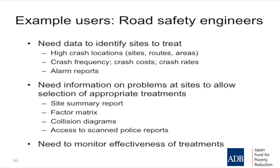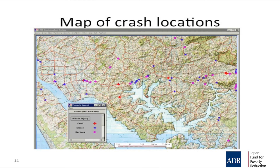Engineers look at the number of crashes, crash costs, and crash rates. They also look at locations where crashes have increased unexpectedly. The information is needed to become a detective at these locations — to understand the problems and identify the solutions. There are a whole range of tools used by road engineers. Engineers also use this information to monitor the success of their treatments; for example, if a roundabout is installed at an intersection, has it had a benefit, or has the problem stayed the same or gotten worse? They need to understand crashes before and after treatment.